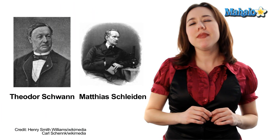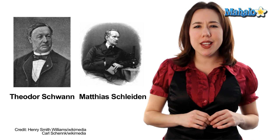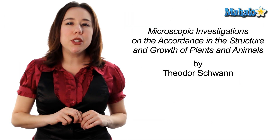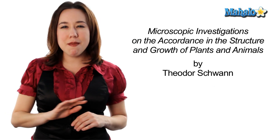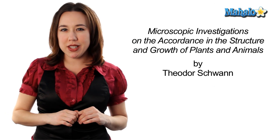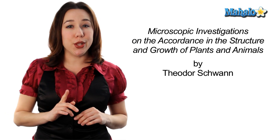In 1838, Theodor Schwann and Matthias Schleiden were enjoying some after-dinner coffee talking about their studies on cells. It has been suggested that when Schwann heard Schleiden talk about the nuclei he was observing in his plant cells, he was struck by the similarity of the things he was seeing in his animal cell studies. The two scientists rushed back to Schwann's lab to take a look at his slides. The very next year, Schwann published his book on his findings on both plant and animal cells. However, it was completely devoid of any acknowledgement from any other scientists, including Schleiden.